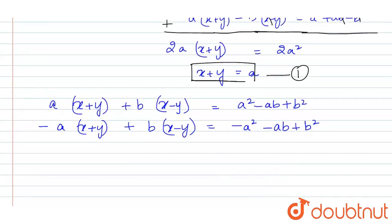So if we subtract it, let us see what we will get from here. Now this will cancel out. Now we will get 2b(x-y) = -2ab + 2b². This is because this will get cancelled out and this also.